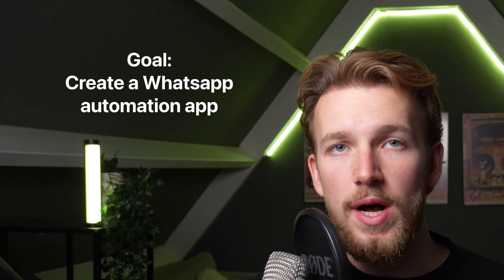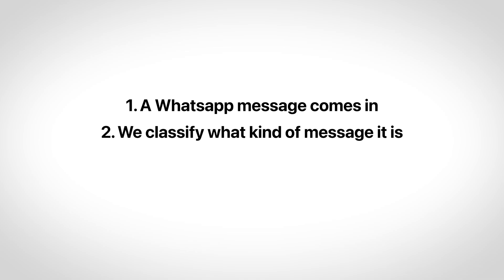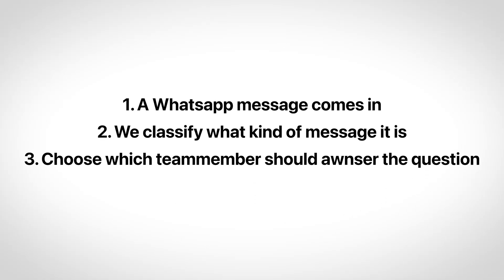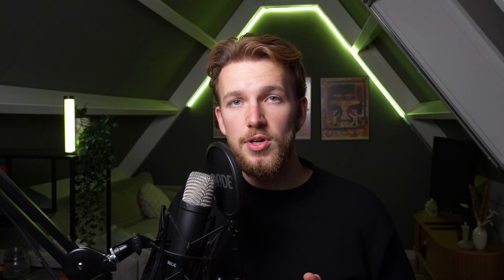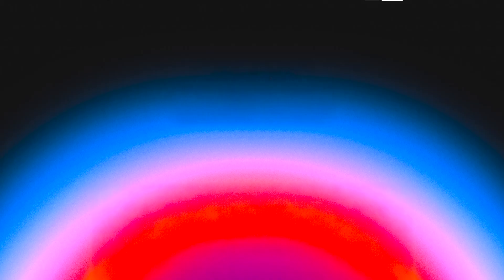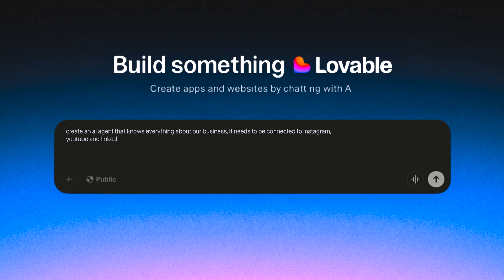Let's say we need to create a WhatsApp automation app — a WhatsApp message comes in, we classify what kind of message it is, determine which team member needs to answer, and everything is visualized in a dashboard. We have two approaches: we could create the whole flow in N8N, connect all our endpoints, and then use another tool like Lovable to create a frontend — so you're using two different systems to create one app. With an AI builder like Lovable, Google AI Studio, or Replit, we can just take the project description, put it directly into Lovable, and get the exact same results but in one app — without dragging and dropping, without needing to understand all the underlying technology.